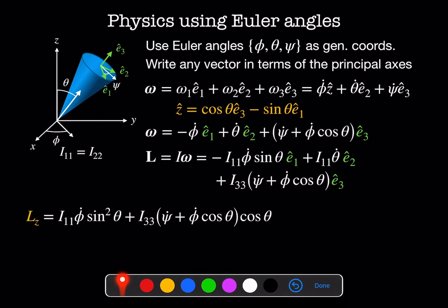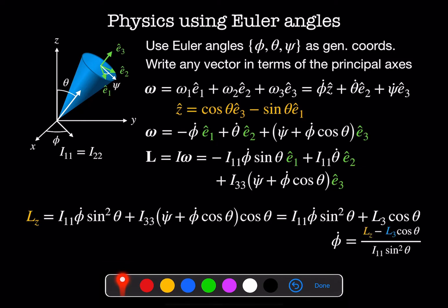It'll help us later if we write out the expression for the z-component of the angular momentum. We end up with cosine theta times L3 minus sine theta times L1, which gives us I11 times phi dot times sine squared theta plus I33 times psi dot plus phi dot cosine theta times cosine theta. Since this term equals L3, we can write I11 times phi dot times sine squared theta plus L3 cosine theta equals Lz. Rearranging, phi dot equals Lz minus L3 cosine theta divided by I11 sine squared theta.